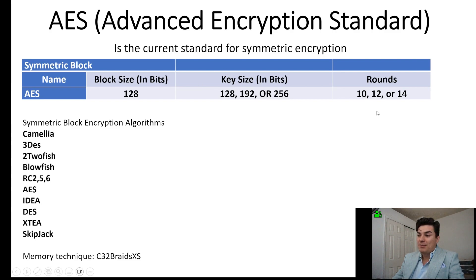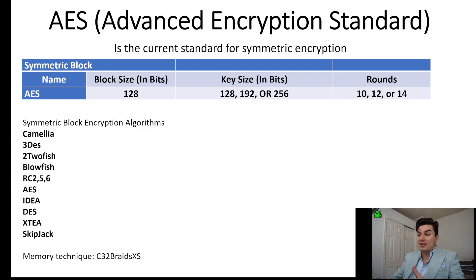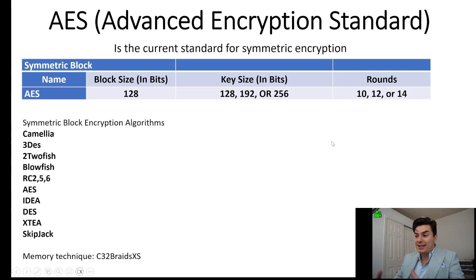192 means 12 rounds, and 256 matches up with 14 rounds. And those rounds refer to transformation, substitution, and all the mathematical operations that it processes. So the more rounds, the more randomness in the output, and the stronger the encryption.